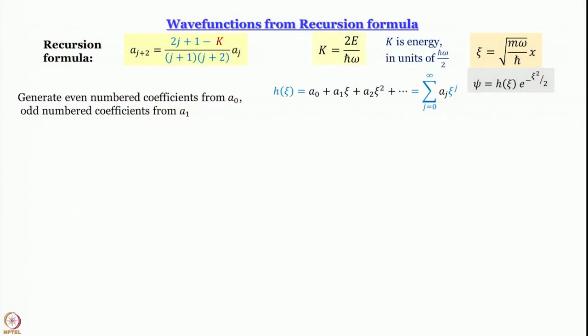With this recursion formula we try to find what the wave function actually looks like. The recursion formula lets one generate even-numbered coefficients from a₀ and odd-numbered coefficients from a₁. What we need in the subsequent discussion is summarized here. We also remember what k is: k = 2E/(ħω), and we already know the expression for Eᵥ.